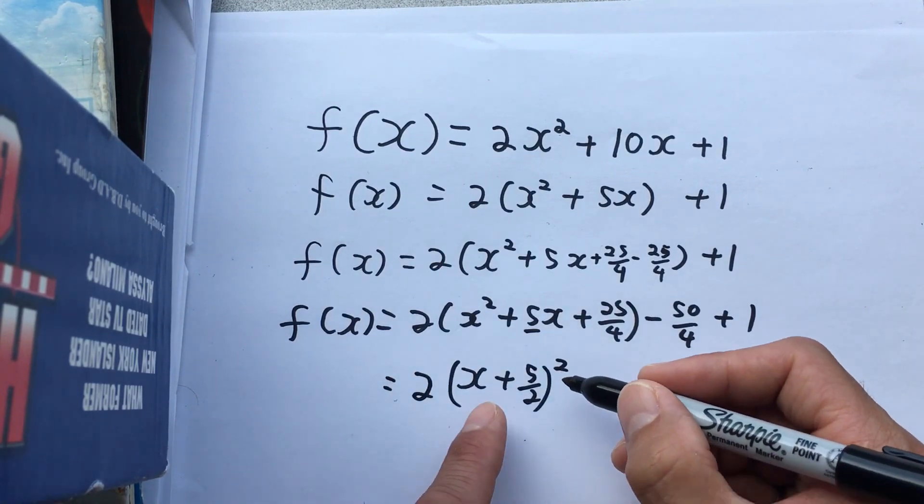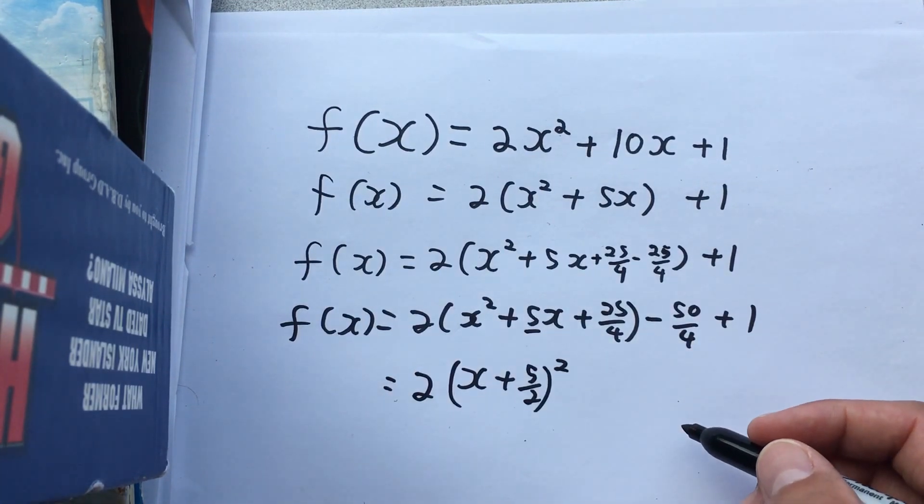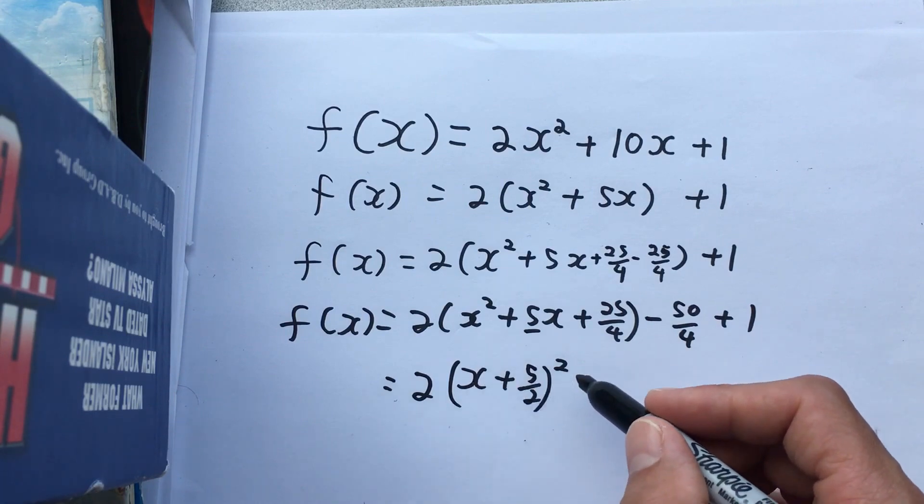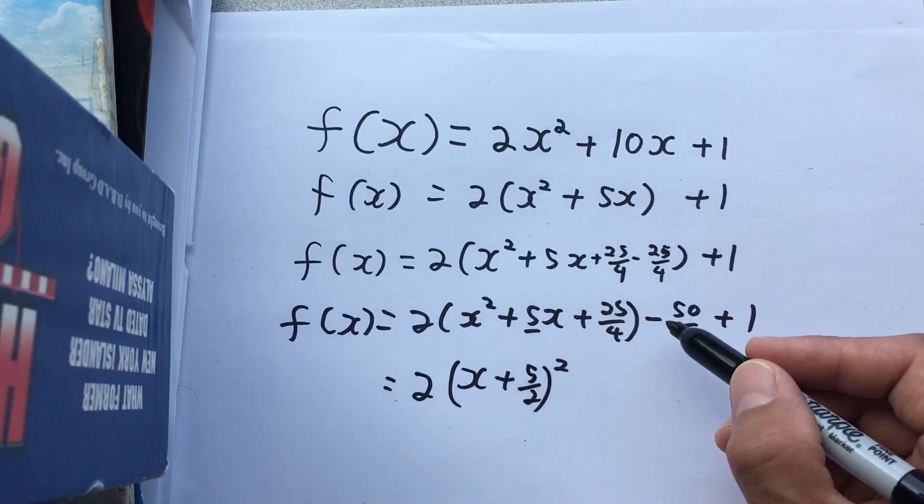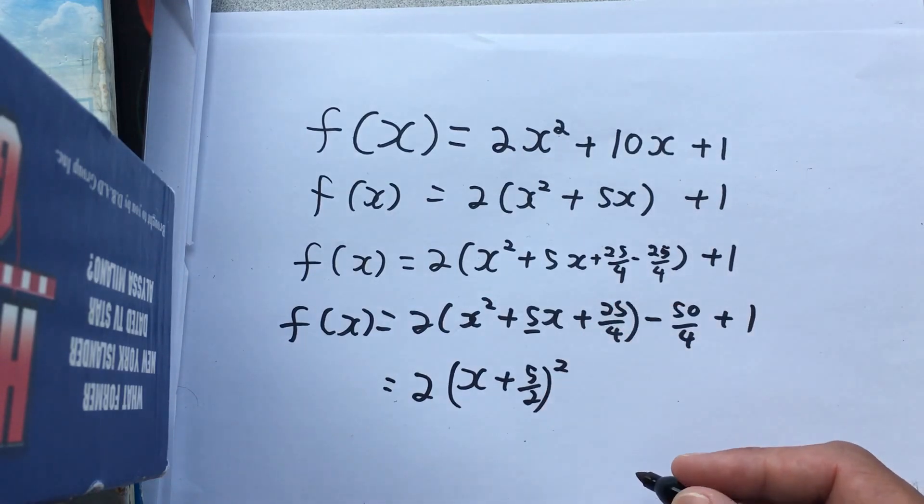Now if you want to know why that works, it's really best to understand these backwards. It works because if you multiply that out, you get the previous line. And if those lines are equal, then what you're doing is correct.